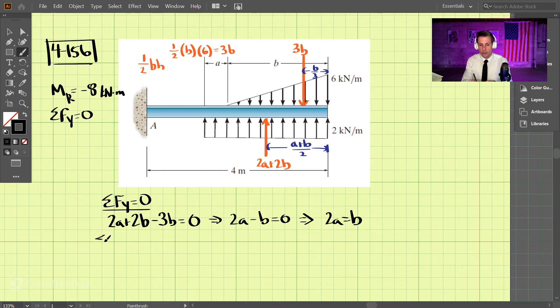Now we'll take the sum of moments around point A. The resultant should equal negative eight—negative because that's clockwise and counterclockwise is our positive sign convention. The 2a + 2b force will create a counterclockwise rotation, which is a positive moment. So we have 2a + 2b times the distance it acts away.